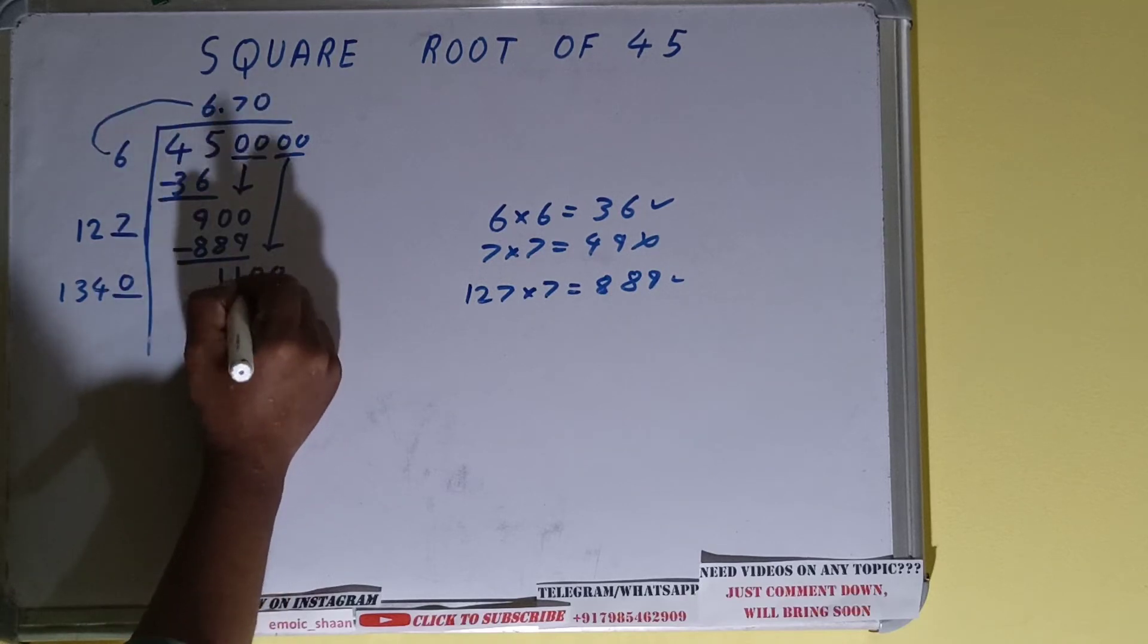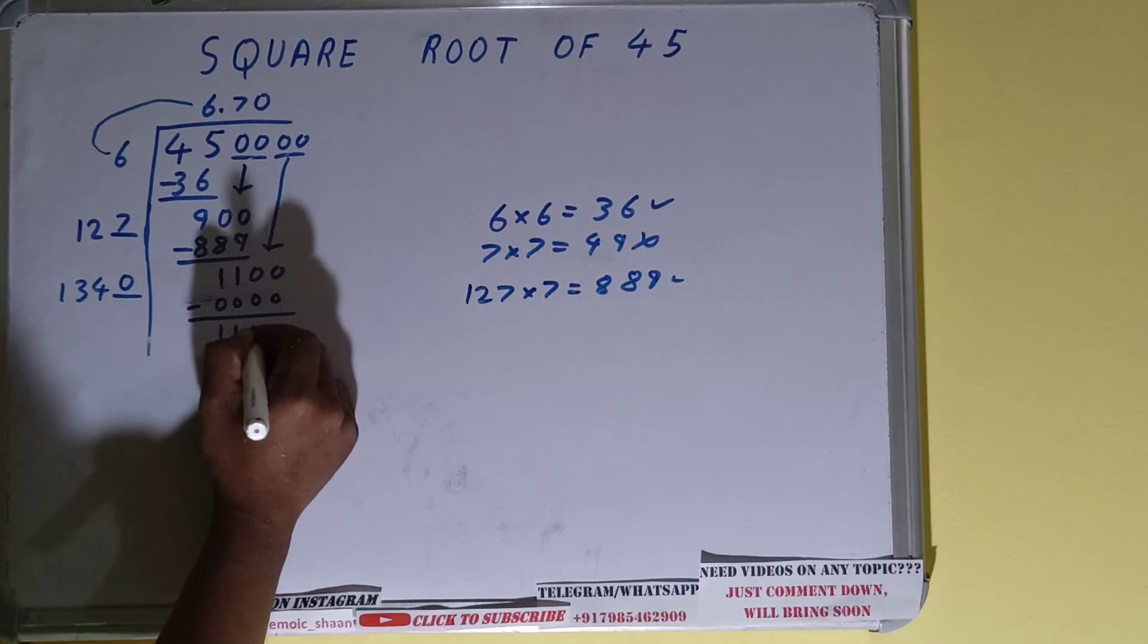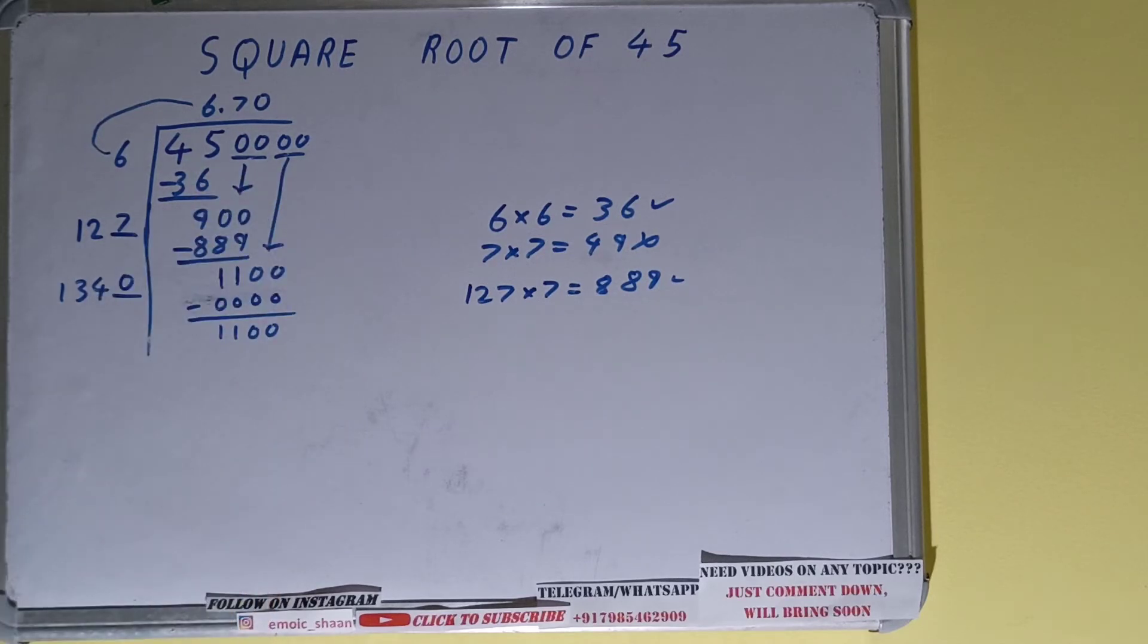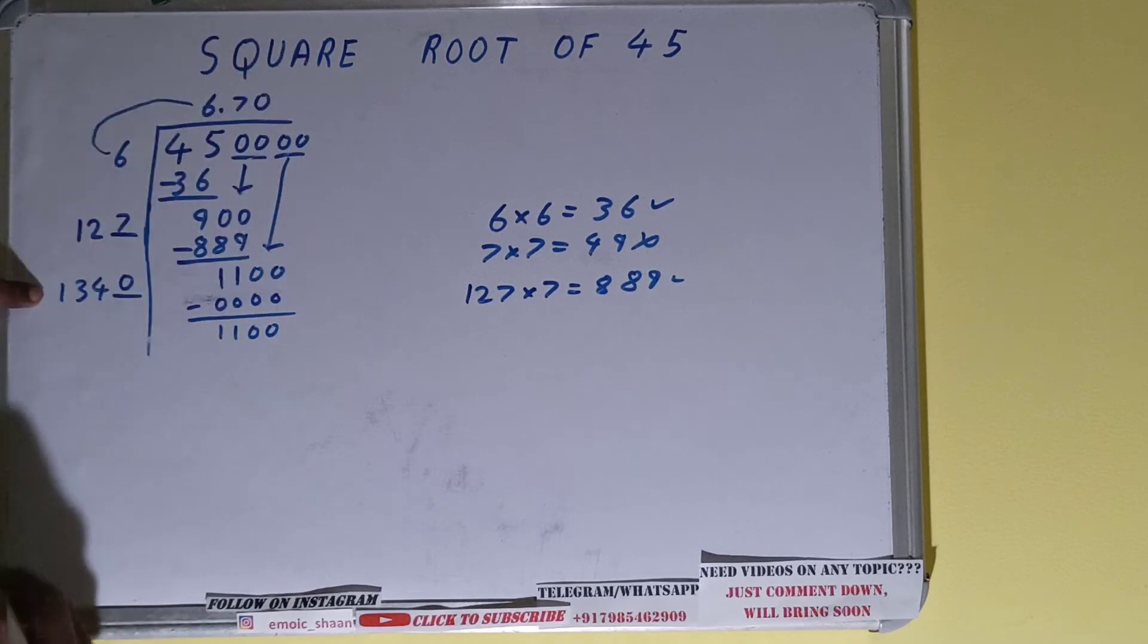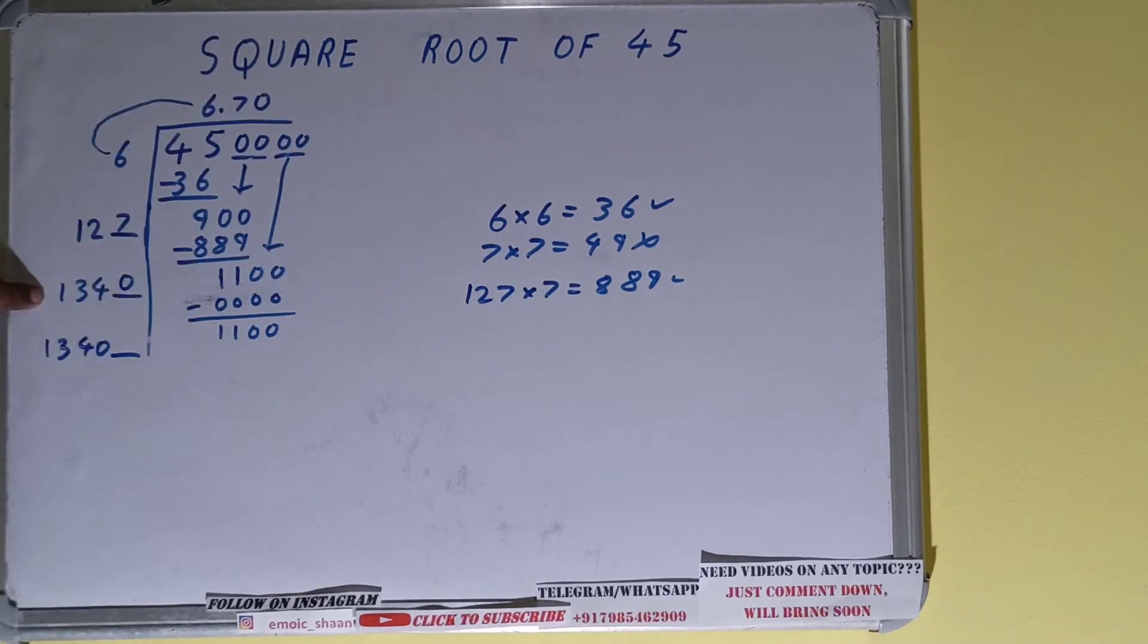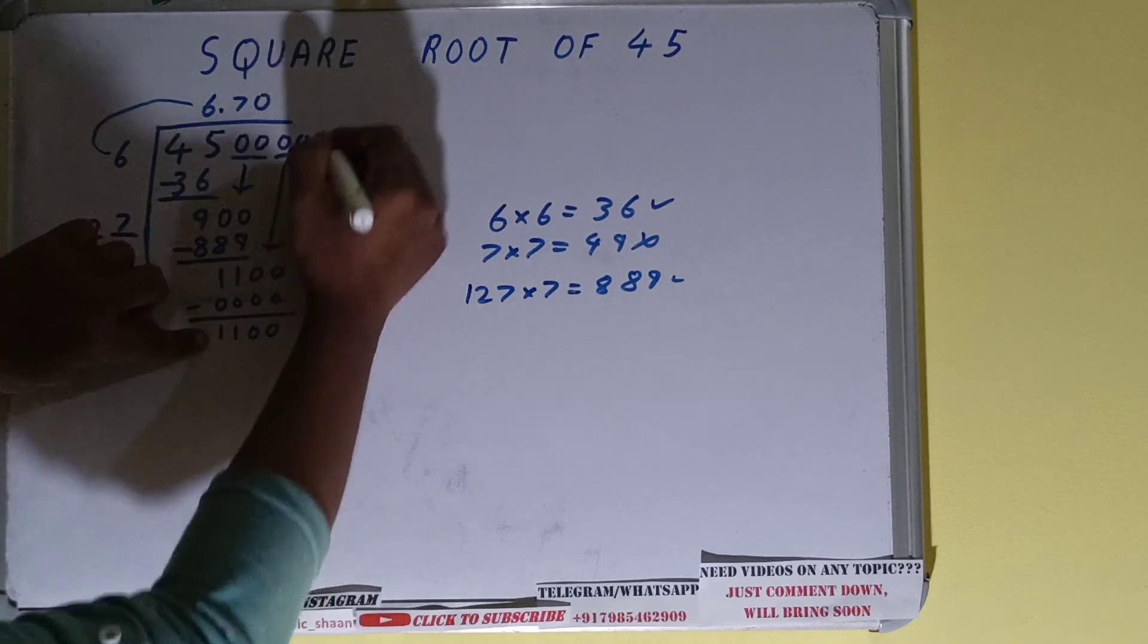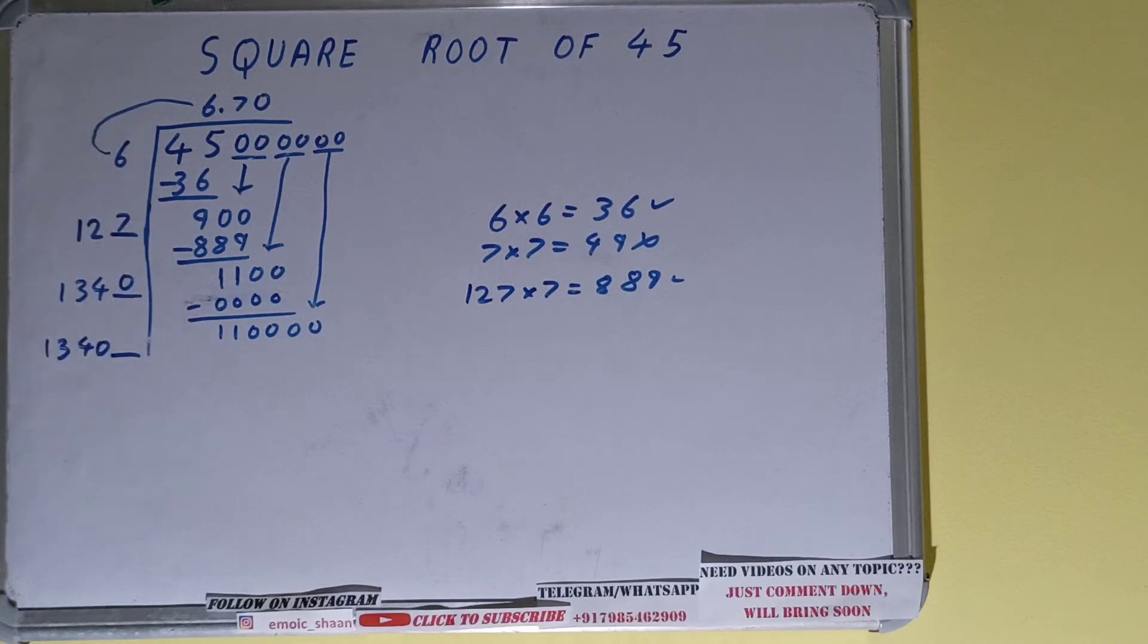So we'll have 0 here. Subtract it, we'll be left with 1100. Okay, now further on what we need to do is with this 1340 we multiply it with 0, right? So add both, the number will remain same but the digit will increase. And over here we'll bring one more pair of zeros, so this number will also become bigger.